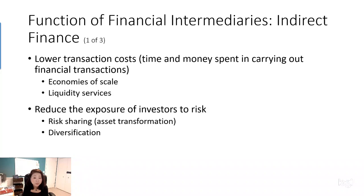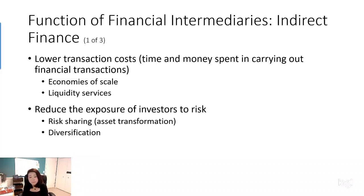The second reason we need a financial intermediary is that it helps to reduce the exposure of investors to risk. If you only have a thousand dollars and the company that borrowed money goes bankrupt, instead of all ten thousand dollars coming from you, it comes from different investors, so each one might only lose a thousand dollars. This allows individuals to share the loss. Also, if you deposit a thousand dollars to a bank, the bank can spread that thousand dollars across different investment assets — treasury bills, corporate projects, government projects — to diversify the risk. That's why most financial transactions in the United States go through financial intermediaries.